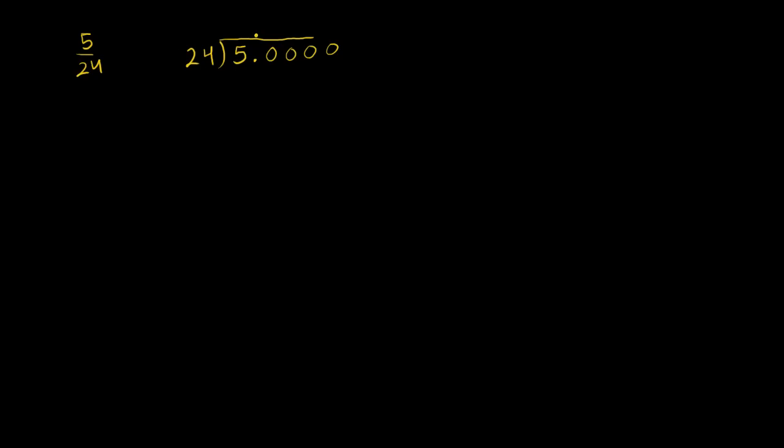So let's do a little bit of division. 24 goes into 5. We're going to have to add some extra spaces to the 5 because obviously this is going to be less than 1. 24 is a larger number than 5. So let's put our decimal right there. And we can now do some division. 24 goes into 5 zero times. 0 times 24 is 0. 5 minus 0 is 5.